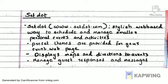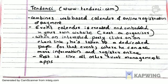We create an event web page with preset themes, including a map and directions. The last one is www.tendency.com — this one is a web-based calendar and online registration tool.